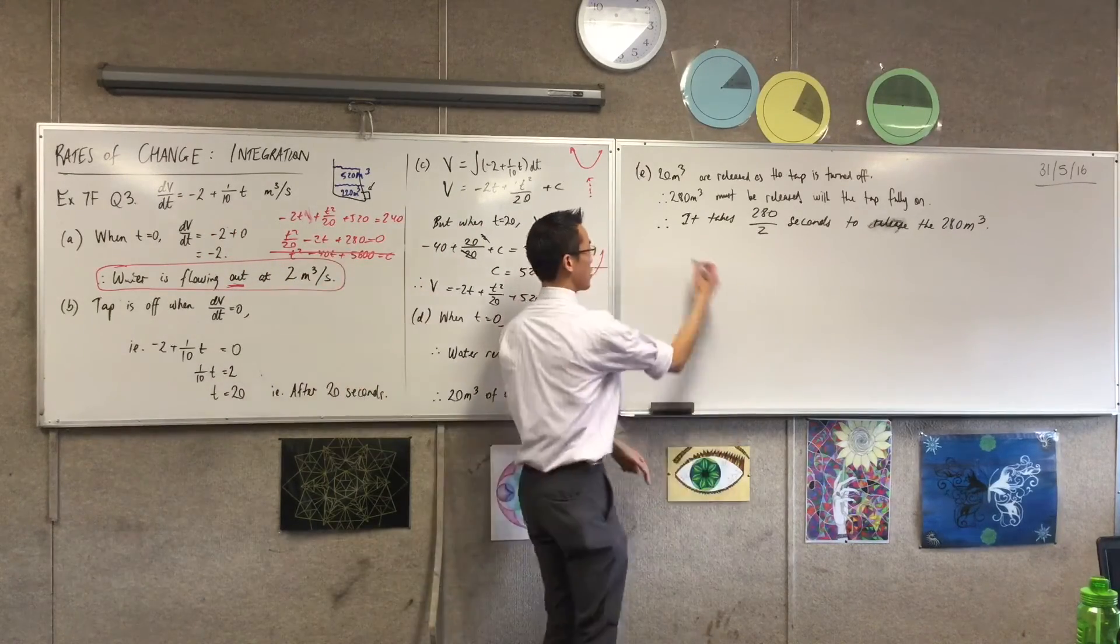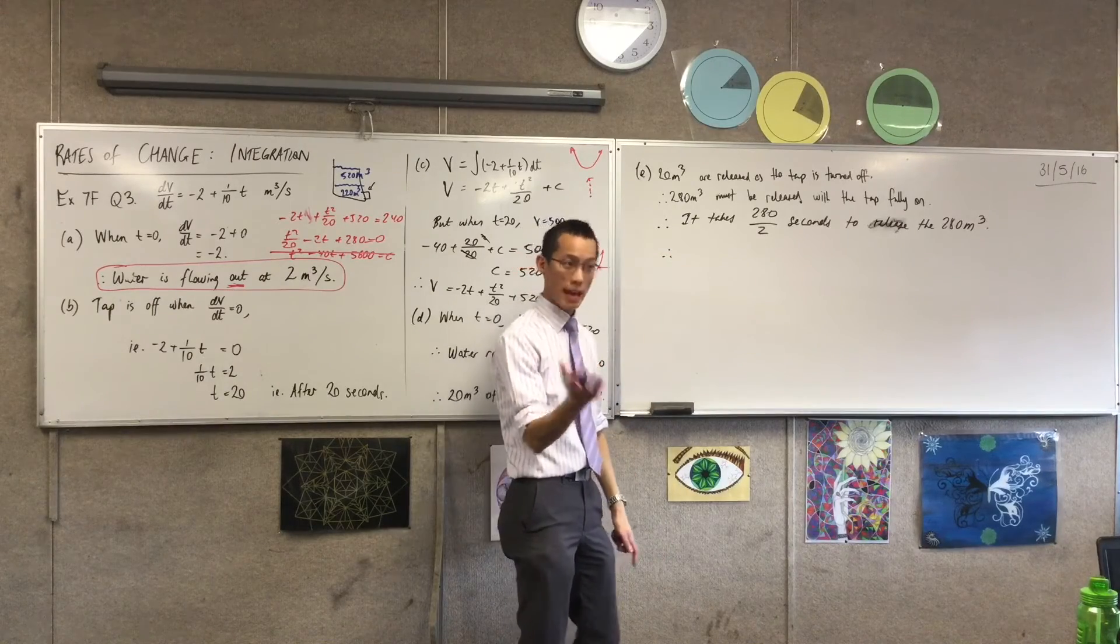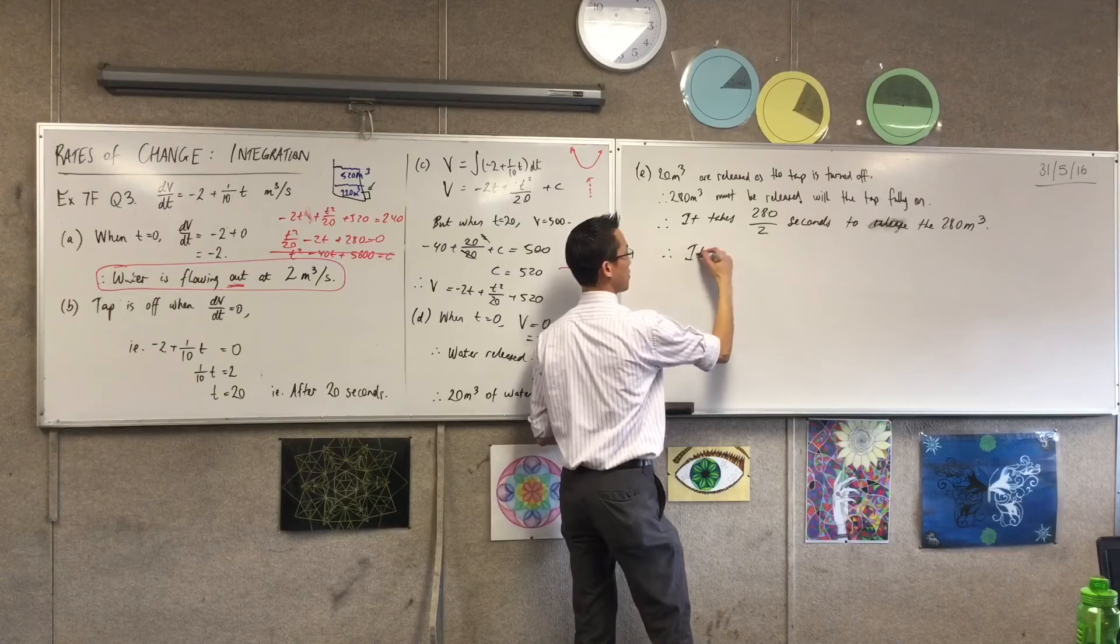and it's just division, no calculus involved. You've already worked out the flow rate. So therefore, 140 seconds, what's that? Two minutes and 20 seconds. Two and a third minutes.